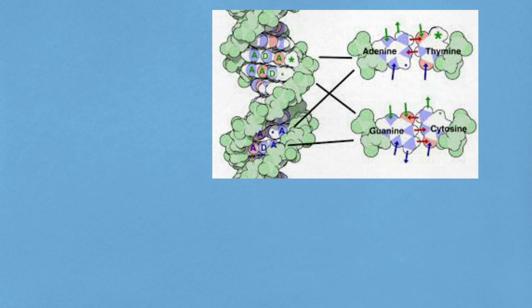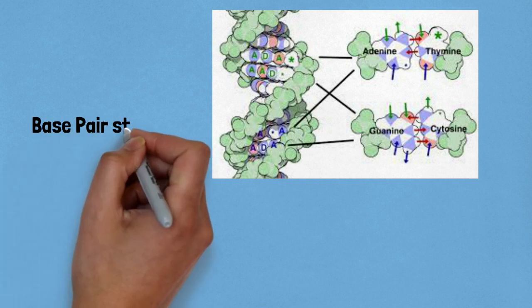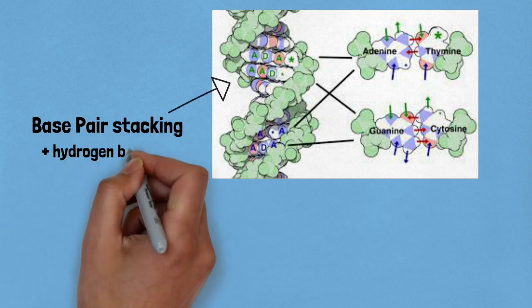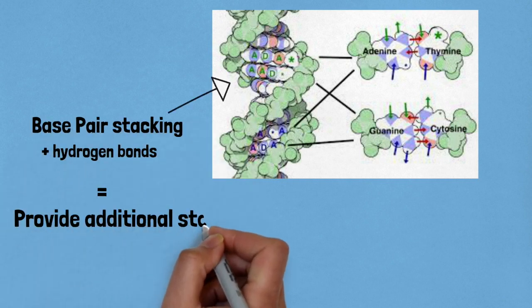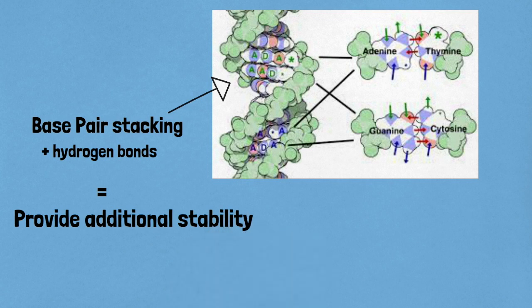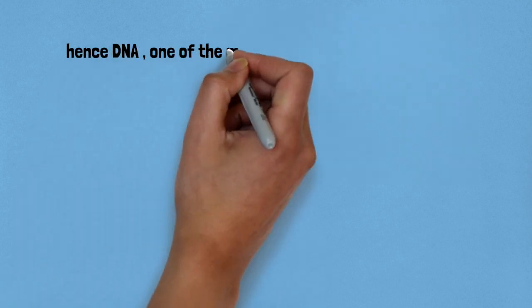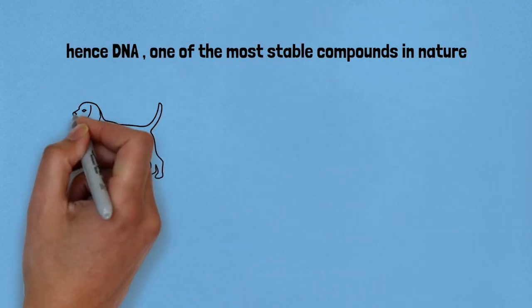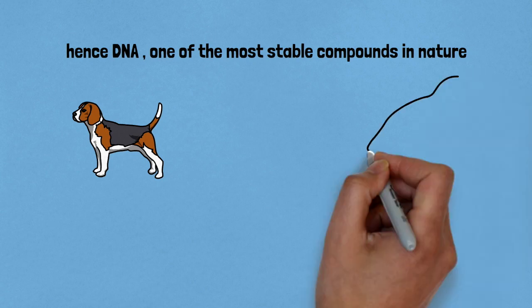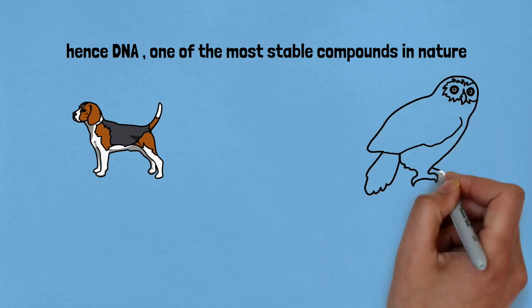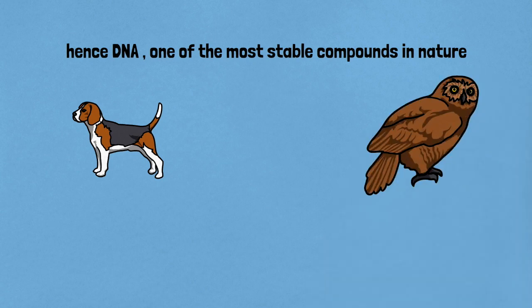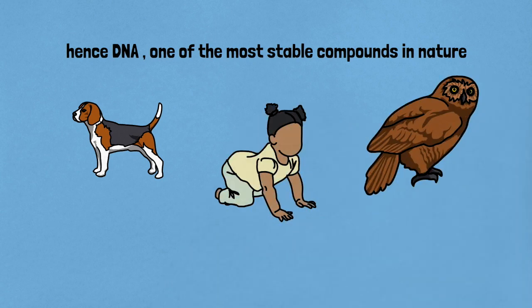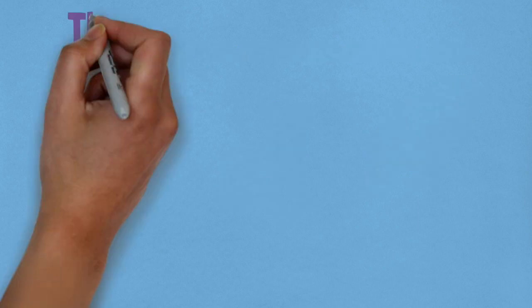In the DNA, the base pairs are stacked over one another and it also has hydrogen bonds which contribute to additional stability. This is why DNA is one of the most stable compounds in nature, and the proof is in front of all of us — each and every living organism consists of this tiny molecular structure.